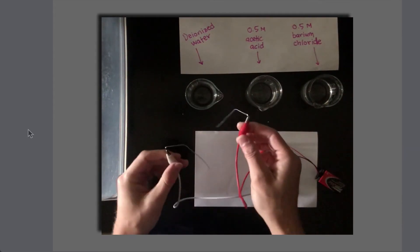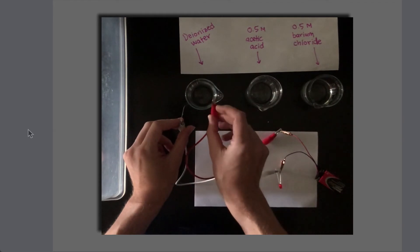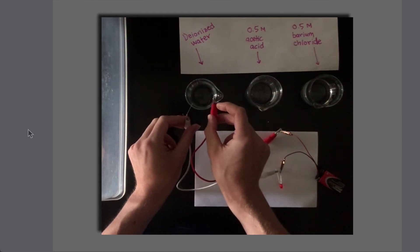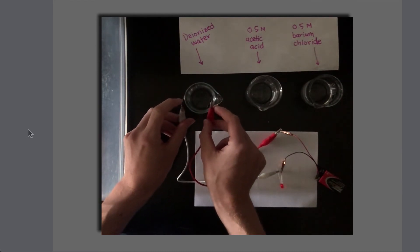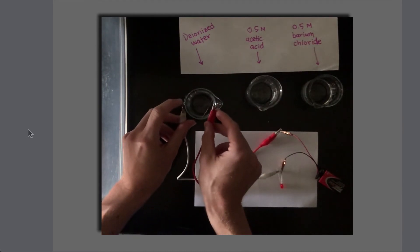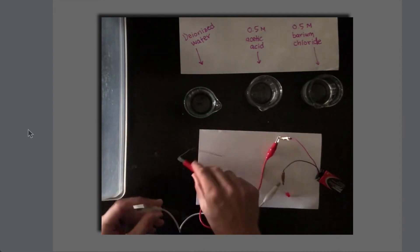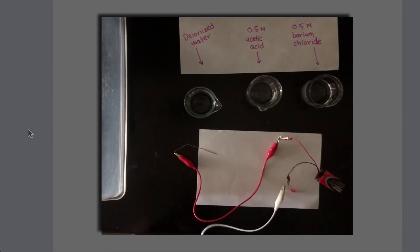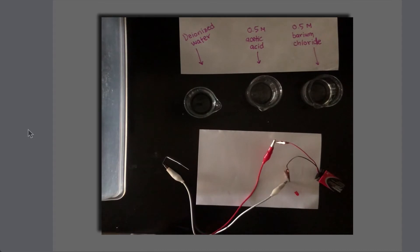Now with the lights off, I'm going to insert these paper clips into the deionized water liquid, and there is little to no color coming through there. That brief moment of light you saw was because the leads connected inside the deionized water, so essentially nothing going on there in terms of current. It appears that the deionized water then is what we would call non-conductive. There's no electricity running through that.